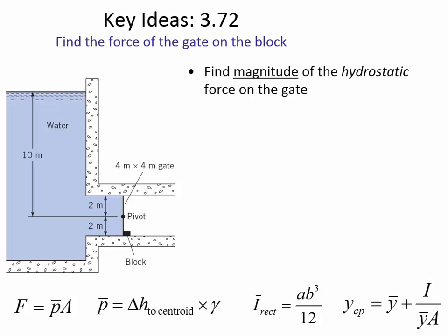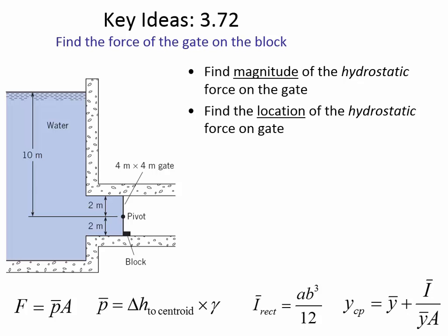In this problem the fluid is water, so you can use gamma of 9810. Then you have to find the location of the hydrostatic force. You're in luck because this is a vertically oriented gate and that makes things really easy — the Y-bar and the delta H are the same. So if Y-bar is the same as delta H, then calculating YCP is pretty straightforward. That YCP gives you the location of the hydrostatic force, which is the vertical distance from the water line down to where the force is located.